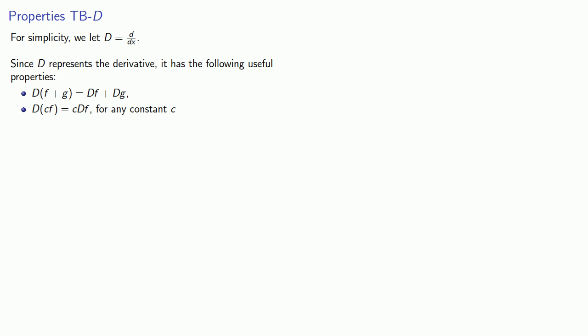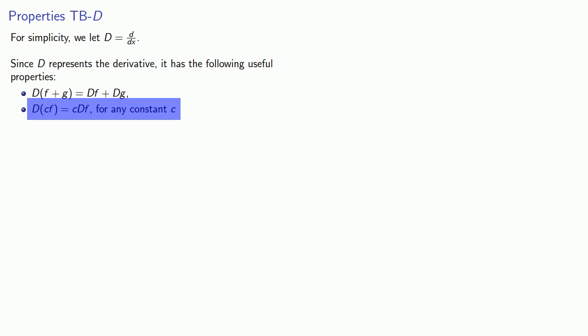Any function that acts this way — where applying it to a sum gives the sum of the function applied to the individual terms, and applying it to a constant times something gives the constant times the function applied to that something — is what we call a linear operator. So we say that D is a linear operator.